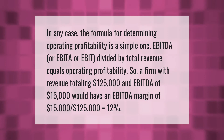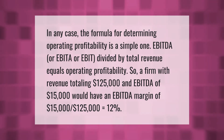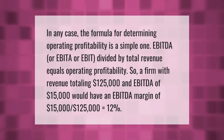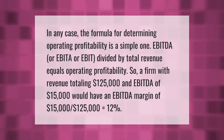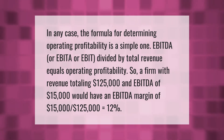The formula for determining operating profitability is a simple one: EBITDA (or EBIT) divided by total revenue equals operating profitability. For example, a firm with revenue totaling $125,000 and EBITDA of $15,000 would have an EBITDA margin of $15,000 divided by $125,000, which equals 12%.